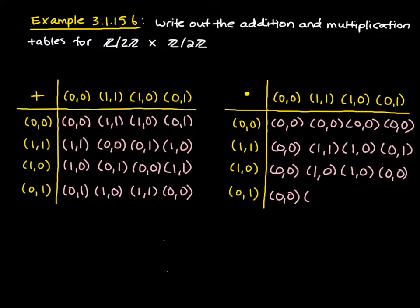And now I can fill out this fourth row, get (0,1), (0,0), and finally (0,1). So we've written out the addition and multiplication tables for Z2 cross Z2.